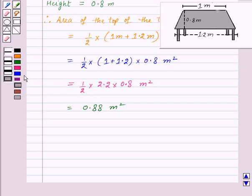Therefore, area of the top of the table is 0.88 meter square. And this is our required answer.